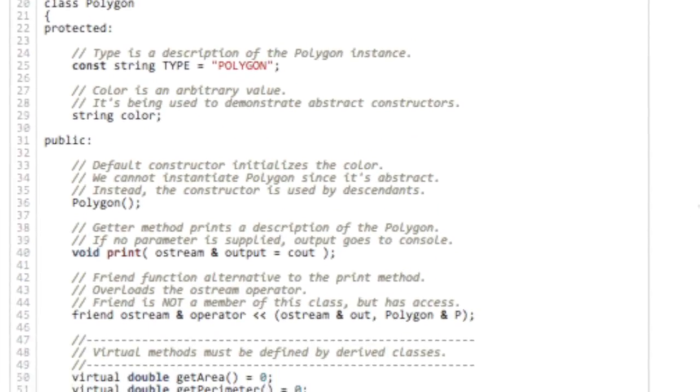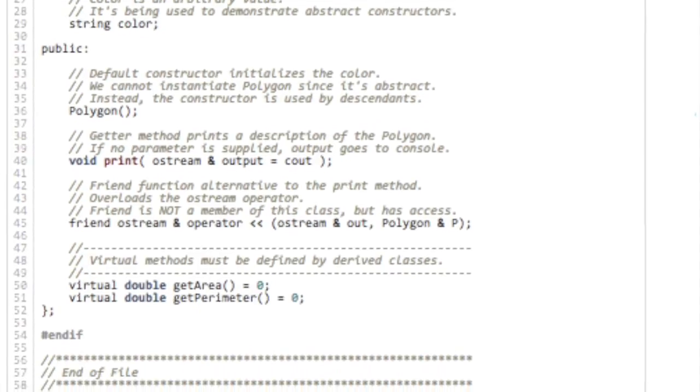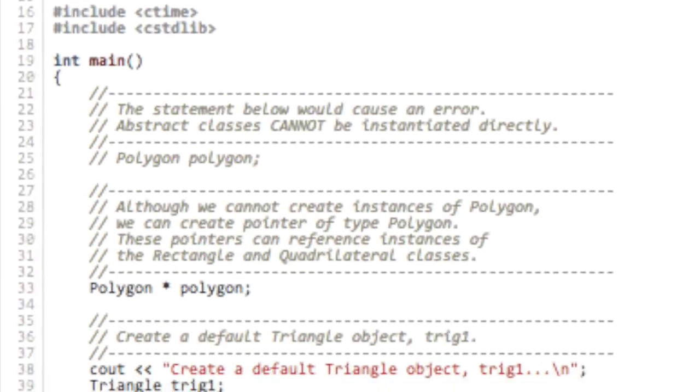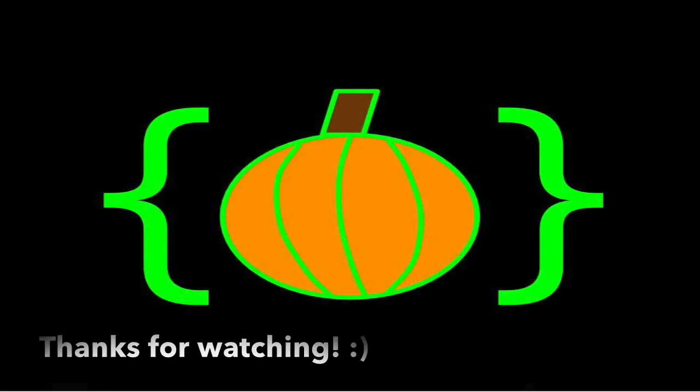You can see how abstract classes can be used to declare virtual functions, as well as create pointers to objects of derived classes. Thanks for watching.